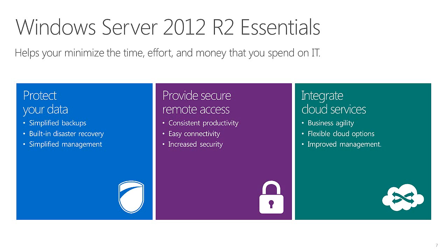Essentials helps you do that. It helps centrally store information, which simplifies backing it up. It has business continuity support and disaster recovery components — when you virtualize, you can take advantage of Hyper-V Replica to provide a very robust business continuity solution for small businesses who previously wouldn't be able to afford traditional approaches. It also provides a simplified management infrastructure with the dashboard to help protect the whole environment and make sure it's healthy.